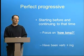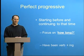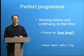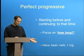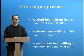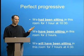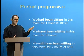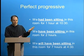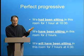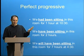The perfect progressive gives us the idea of starting before and continuing to that time. It generally has a focus on how long something is happening. The form will be some form of have, plus been, plus verb-ing. So with the perfect progressive, let's look at past perfect progressive: we had been sitting in this room for one hour at 10:30. The action started at 9:30 and continued to 10:30 — it started before that time and continued to that time. That time is 10:30.